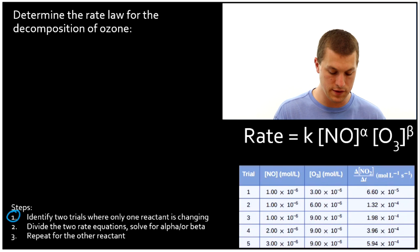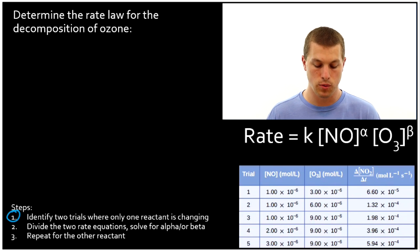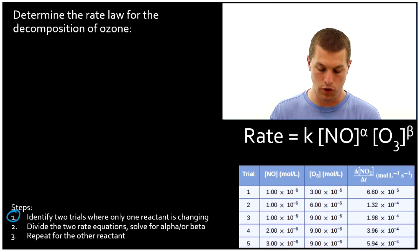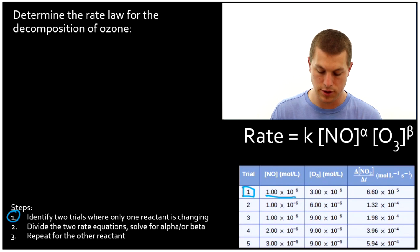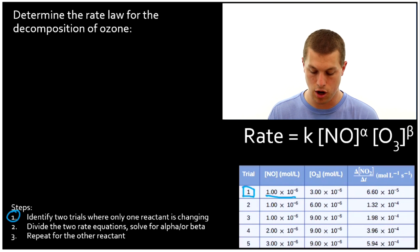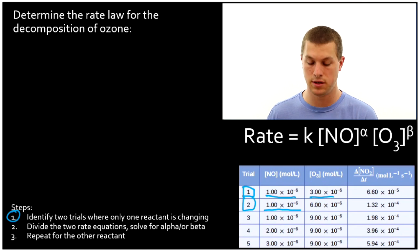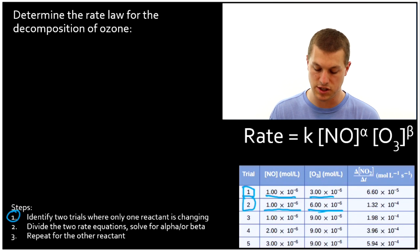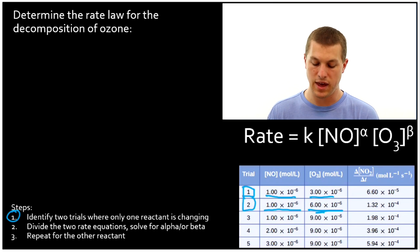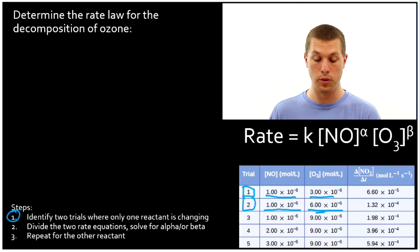Here are the three steps. Step one: identify two trials where only one reactant is changing. In trial one, nitrogen monoxide concentration is 1×10⁻⁶ and ozone is 3×10⁻⁶. In trial two, nitrogen monoxide stays unchanged at 1×10⁻⁶, but the ozone concentration doubles. Those two trials are a good set to start solving for alpha and beta.